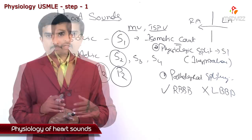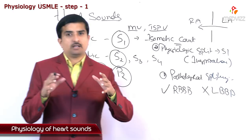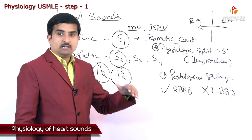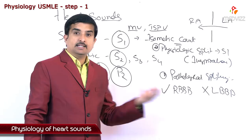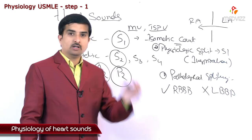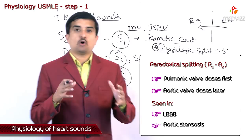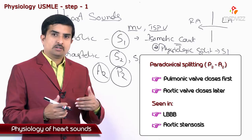Audible splitting can also be identified with right bundle branch block — just as pathological splitting of S1 can be seen in RBBB, pathological splitting of S2 can also be seen in RBBB. There is another type of splitting called paradoxical splitting. Normally, closure of valves on the left side of the heart occurs earlier, meaning the aortic valve should close before the pulmonic valve.